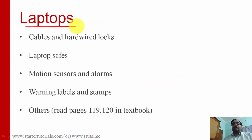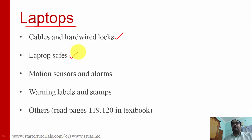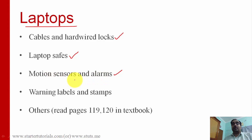Let's look at securing the laptop. Almost all employees in software organizations use laptops or mobiles, or both. In the case of laptops, some security measures can be introduced, such as using cables and hardware locks. If your laptop holds sensitive information, you can use laptop safes — it's like a briefcase. You can also use motion sensors and alarms: if you are away from your laptop and someone tries to take it, the motion is detected and an alarm is raised. You can also use warning labels, stamps, and other measures.